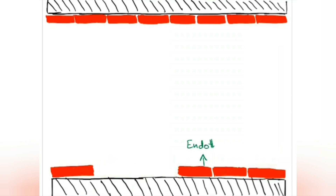Let's discuss this pathway in further detail. Let's say the cut happened here. The endothelium is now disrupted, and the first immediate response comes from the surrounding endothelium as it releases endothelin. Endothelin stimulates vasoconstriction. As the endothelial cells constrict and become closer together, they allow less blood to leak. So this first step, vasoconstriction, is trying to minimize the bleeding.